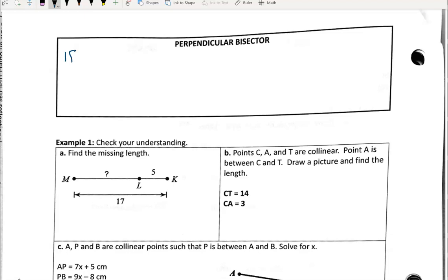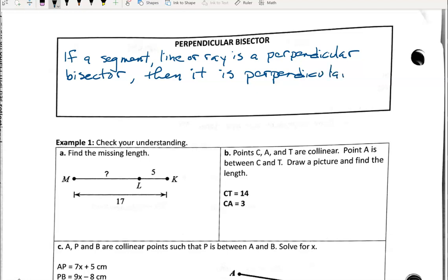If a segment, line, or ray is a perpendicular bisector, then it is perpendicular to a segment and it bisects the segment. I know I used both of those words in the definition.